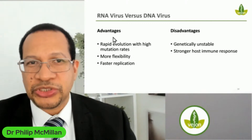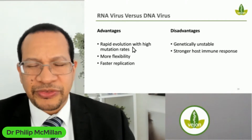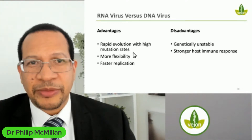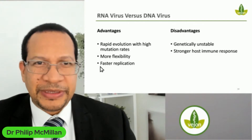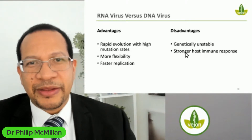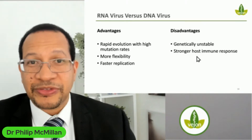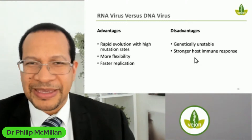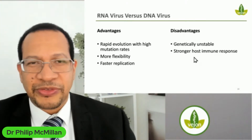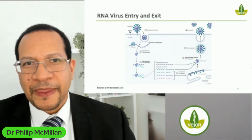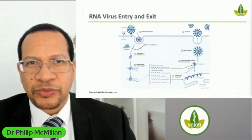RNA viruses have much more rapid evolution with very high mutation rates — unlike DNA viruses that try to conserve their sequence exactly. RNA viruses are rapidly evolving and replicate much faster, making them more flexible. The disadvantage is that they are unstable and the immune response can sometimes be stronger against them. This is why Epstein-Barr virus is much harder for the immune system to clear, while for most RNA viruses — like cold or influenza — the immune response can usually get on top of it relatively quickly.